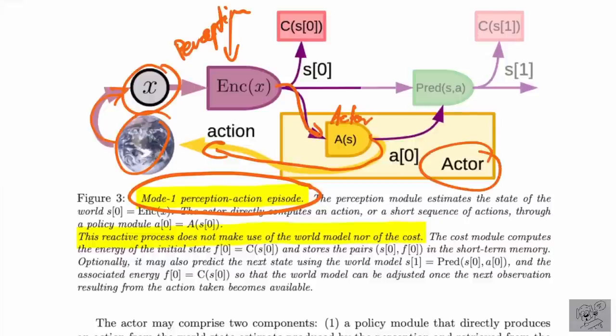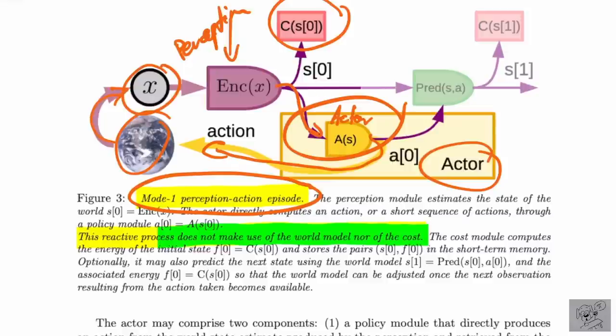Even this reactive process does not make use of the world model nor the cost. There is a cost module that tells how much something is good or bad — intrinsic motivation, external reward, anything like this. However, in this basic loop, the actor has been trained already to just act on a percept. At inference time the actor doesn't need to look at the cost anymore in order to act. This is what we're very used to from current model-free reinforcement learning algorithms — they simply train the actor using the reward, then at inference time let the actor act and rely on that training. This is a mode one perception-action episode.